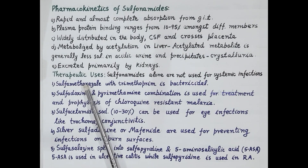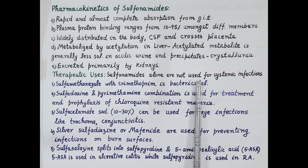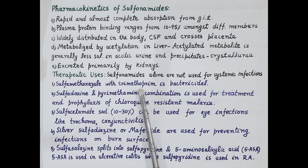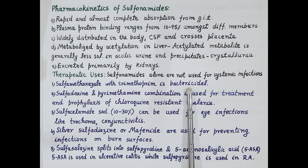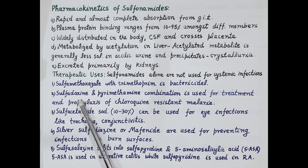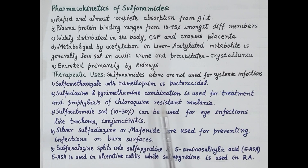Now let's study therapeutic uses of sulfonamides. Many bacteria have developed resistance to sulfonamides, so sulfonamides alone are not used for the treatment of systemic infections. However, sulfamethoxazole in combination with trimethoprim is bactericidal — this combination kills bacteria and is used systemically for the treatment of bacterial and parasitic protozoan infections. In addition, sulfadoxine in combination with pyrimethamine is used for the treatment and prophylaxis of chloroquine-resistant malaria.